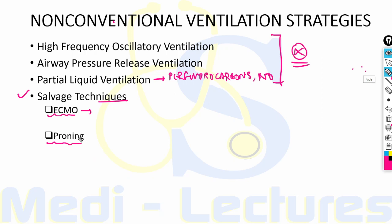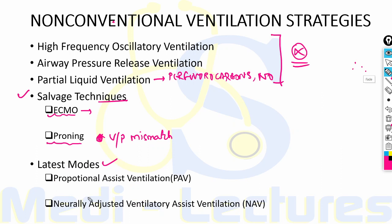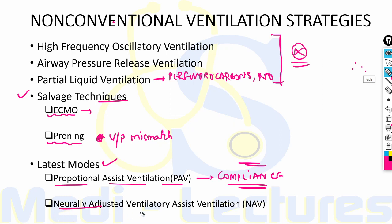Proning is a very effective strategy that increases recruitment of alveoli and improves ventilation-perfusion mismatch. Newer modes include proportional assist ventilation, in which the algorithm incorporates patient compliance in addition to pressure, time, and volume. Another is neurally adjusted ventilatory assist (NAVA), in which neural activation of the diaphragm is incorporated in the algorithm. However, these latest modes, while theoretically sound, are still under study and not routinely used.